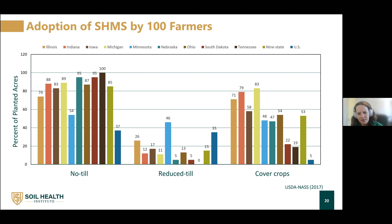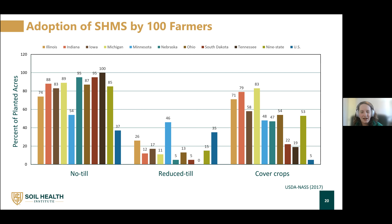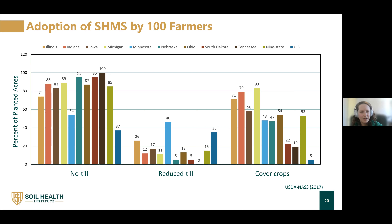One point of interest: Minnesota shows higher numbers in reduced-till than other states. Through the interviews, we found that Minnesota soils are cooler and wetter, making it harder to adopt no-till effectively, but a smattering of farmers did find they were able to introduce a reduced-till system — still working toward the right path. As for cover crops, adoption isn't where no-till is, but comparing to the national average of about 5%, just over half of the farmers we interviewed employed cover crops on their acres.